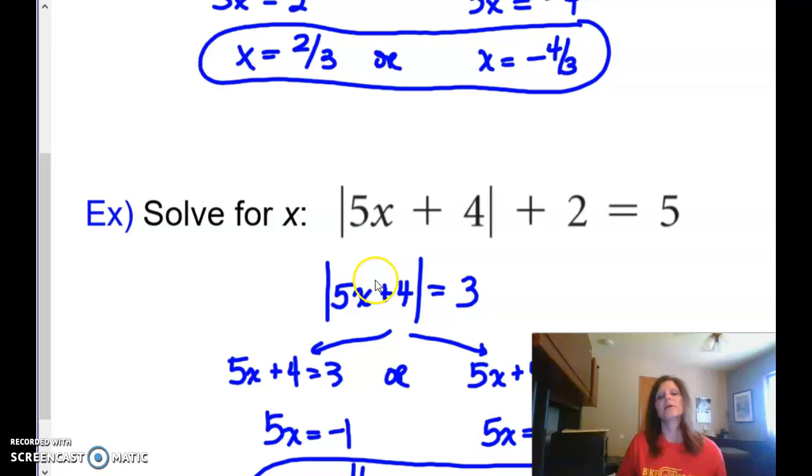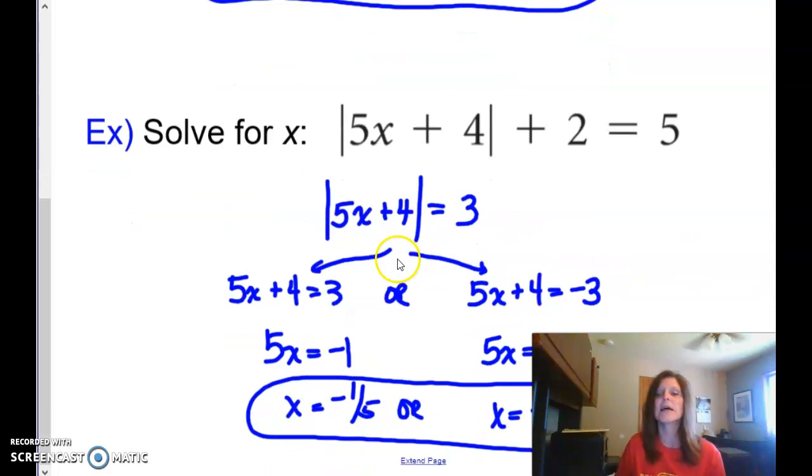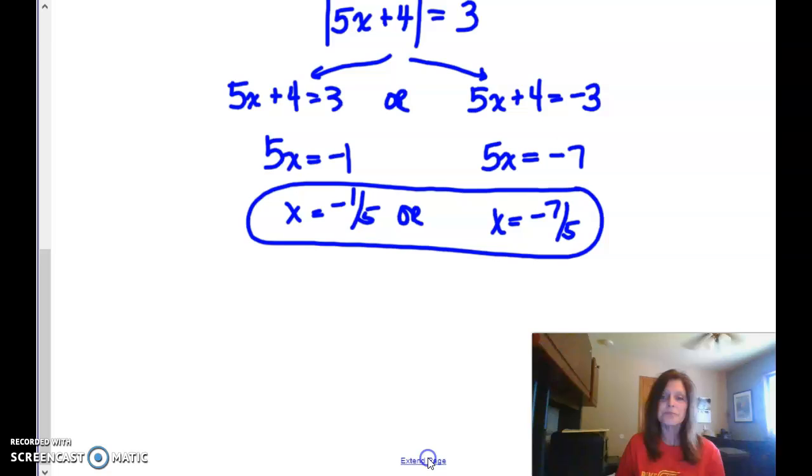Here is another one. The absolute value of 5x plus 4, and then we have this plus 2 equals 5. Again, we'll isolate by subtracting 2 in this case. We'll get our two equations, and then work out our two answers. This one, like I'm telling you, you can't make assumptions. This one, I actually end up with two negative answers.